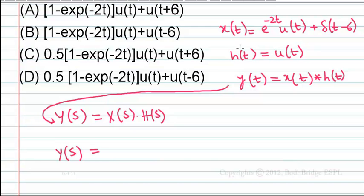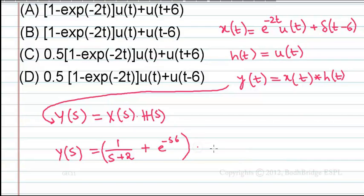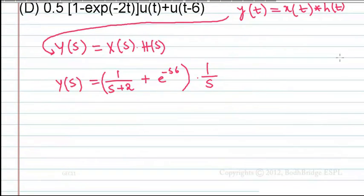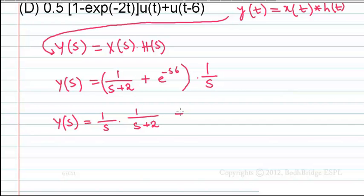First, X(s): e^(-2t)·u(t) has Laplace transform 1/(s+2). In general, e^(-at)·u(t) → 1/(s+a), and δ(t) → 1, so δ(t-6) → e^(-6s). H(s): u(t) → 1/s. Therefore, Y(s) = (1/s)·[1/(s+2)] + (1/s)·e^(-6s).